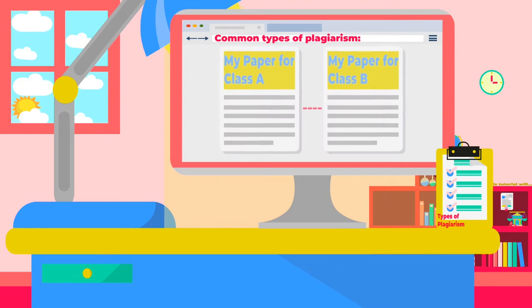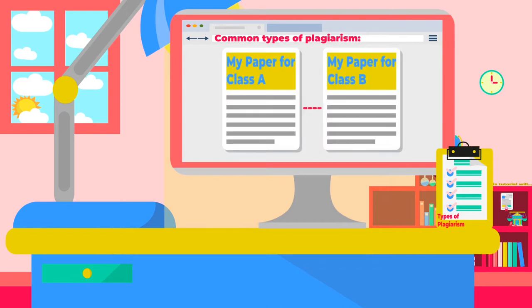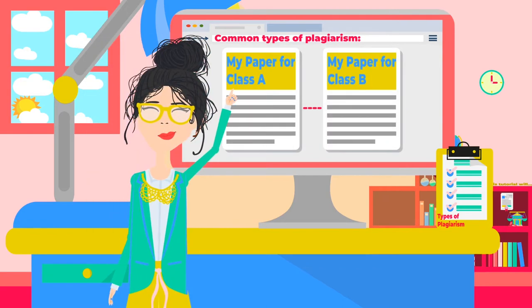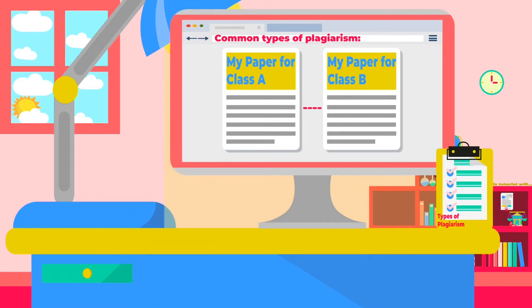Self-plagiarism occurs when a student submits the same assignment in a second class. This violates the assumption that every assignment advances a student's learning and growth. Unless the second instructor expressly allows it, submitting an assignment already submitted for another class is a form of academic misconduct.